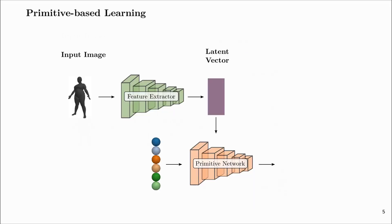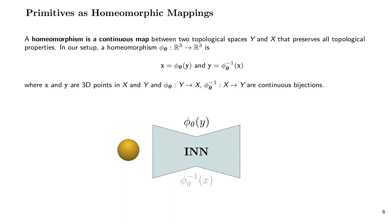Instead, we define each primitive as the deformation of a sphere that is conditioned on the input via a predicted latent vector. This formulation allows each primitive to be an arbitrarily complex genus-zero shape. We define this deformation as a homeomorphic mapping implemented with an invertible neural network.